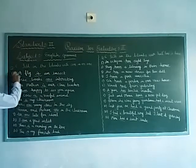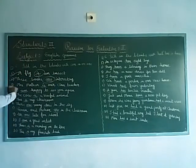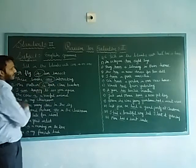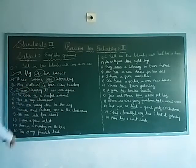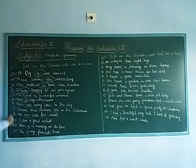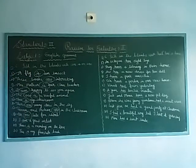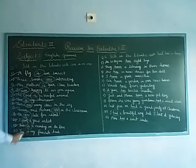Let's check out the answers. First: a fly is an insect. Second: these books are interesting. Third: Mrs. Matur is our class teacher. Fourth: I am happy to see you again. Fifth: the cow is a useful animal. Sixth: this is my classroom. Seventh: there are many stars in the sky. Eighth: one and one are in the class. Ninth: we are late for school. Tenth: I am a good artist. Eleventh: there is a monkey on the tree. Twelfth: this is my favorite book.